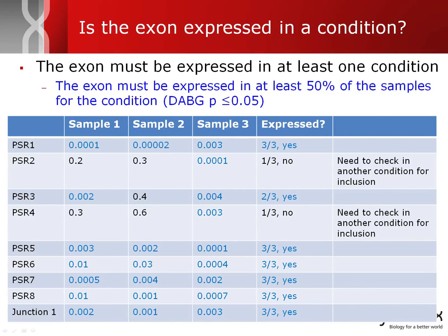Determining whether an exon is expressed is more straightforward: the exon must be expressed in at least 50% of the samples for a condition. Looking at PSR one through eight across three samples, PSR one is expressed in three out of three samples, so it can be included in splice variant analysis — the same is true for PSRs five, six, seven, eight, and one junction probe. However, PSR two and four are each expressed in only one out of three samples. We must check the second condition; if either is expressed there, it can be included. If not expressed in either condition, that exon or junction probe should not be considered.